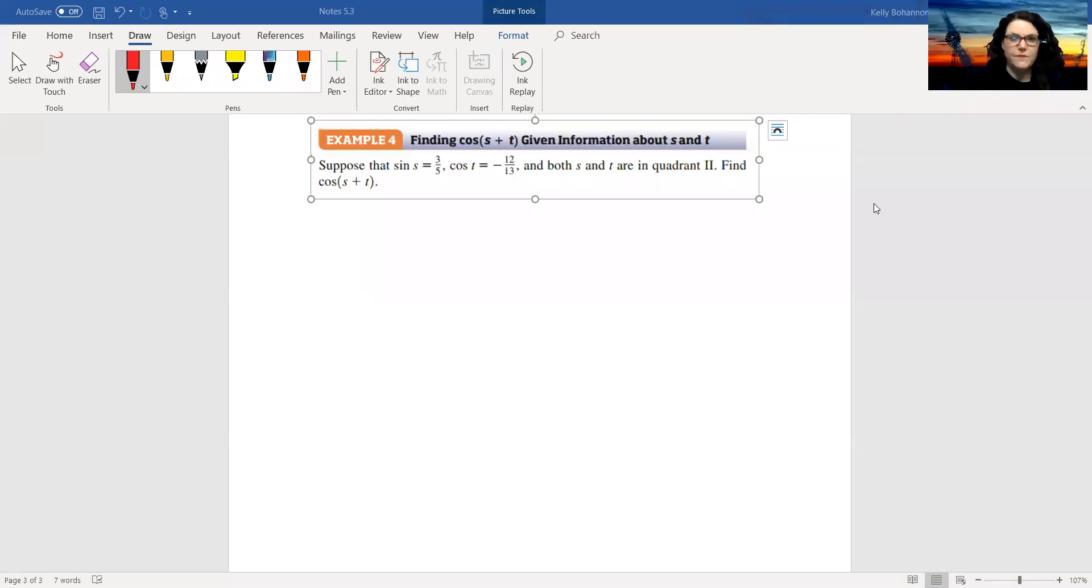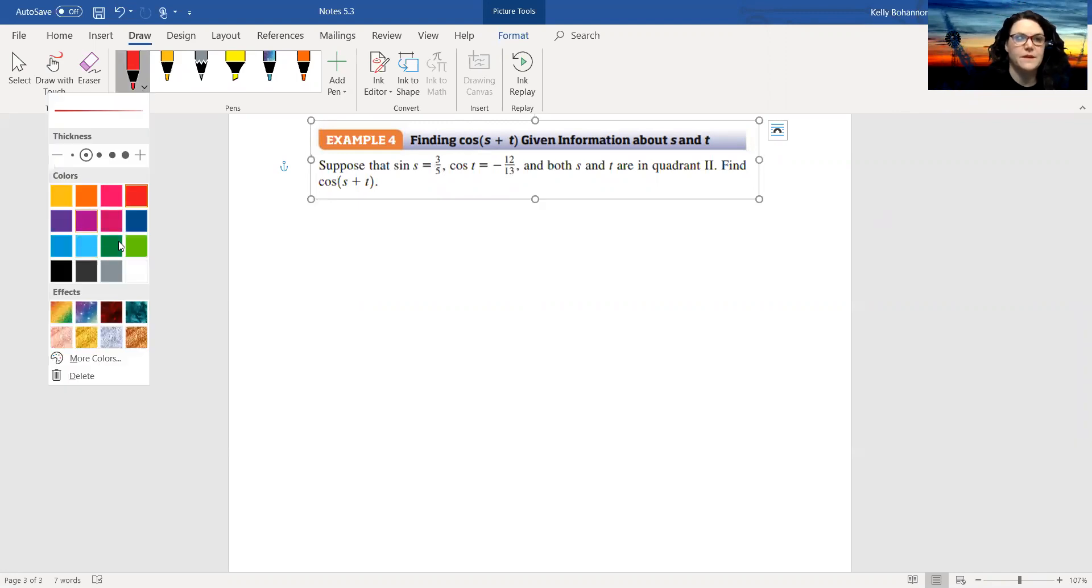Alright, example 4 from 5-3. This one's going to be a little bit trickier because it's going to go back and use some information from early on in the semester. So we just have to think back. Suppose that sine s equals 3 fifths, cosine t is negative 12 thirteenths, and both s and t are in quadrant 2. Find cosine s plus t.